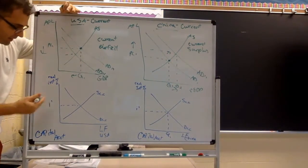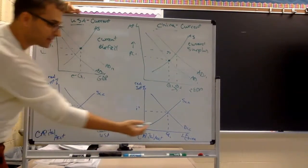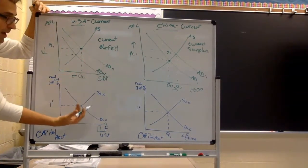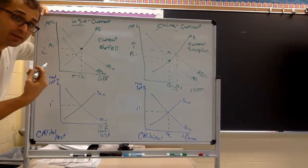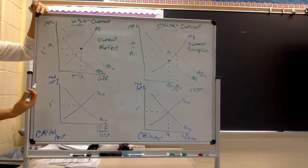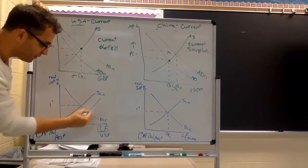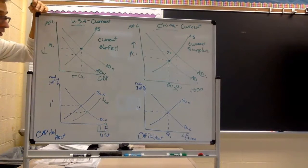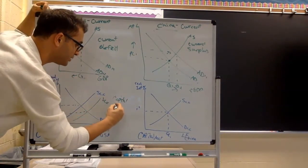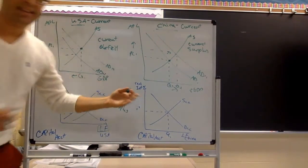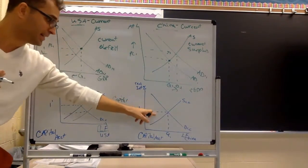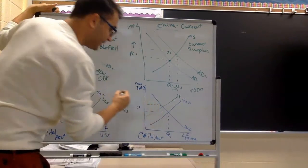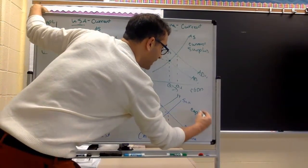For the capital account, think of it as the loanable funds market for the U.S. and for China. If there's a current account deficit for the U.S., money must be flowing in from China to buy financial assets — they're buying goods from us while we're buying financial assets. That means China is investing in us, so the supply of loanable funds shifts to the right, dropping the real interest rate. The U.S. has a capital account surplus. For China, it's the opposite: money is flowing out, supply of loanable funds decreases, their interest rate goes up — so they have a capital account deficit.